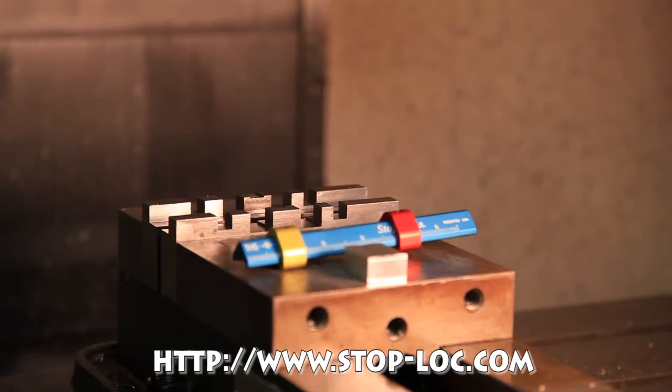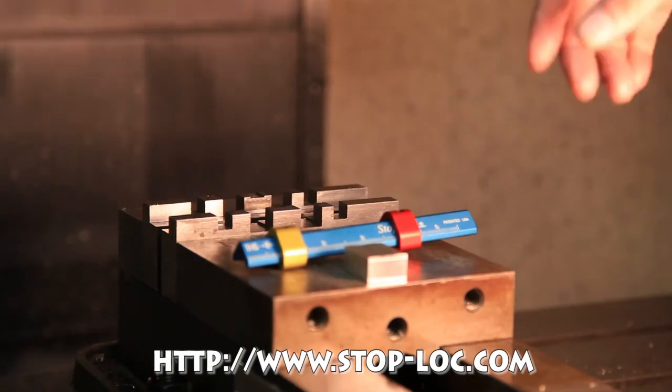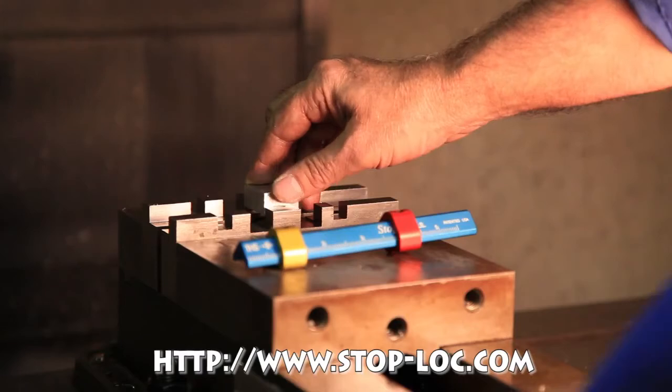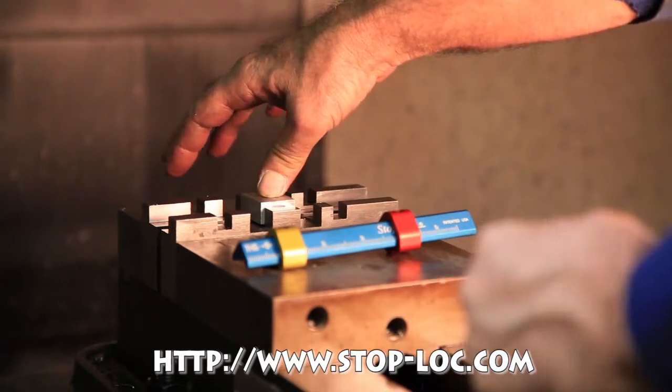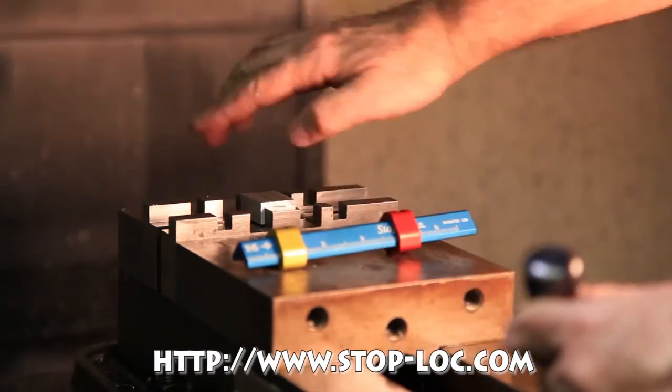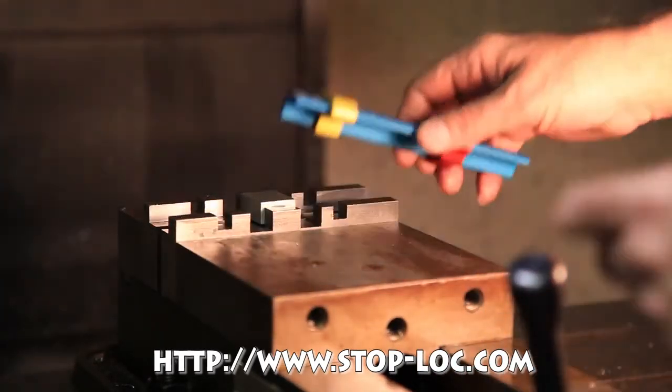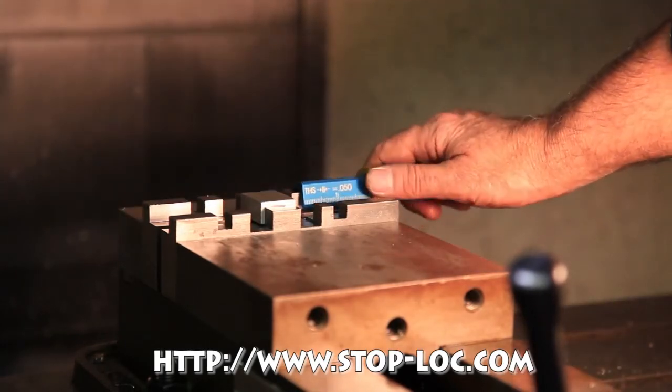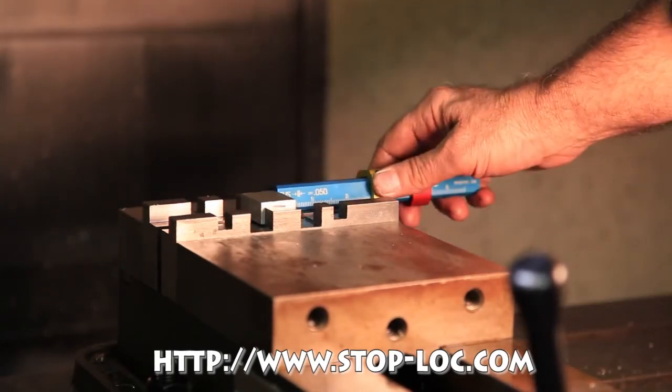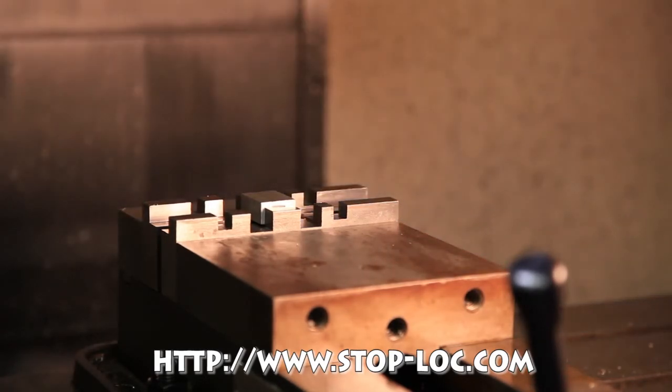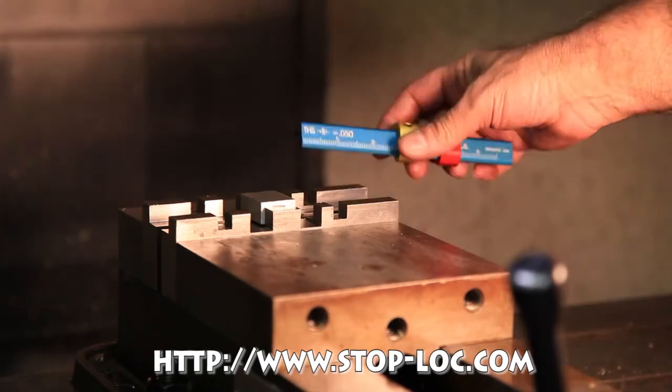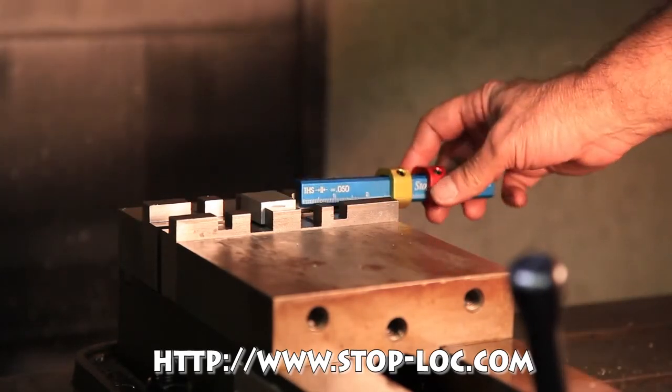I'm now going to demonstrate how handy this Stop-Loc comes in when you're going to machine three sides of a part at one time. Simply put the part in to where it looks like where you want it. So if I take the Stop-Loc, put it loose, tighten the set screw, and now it's there for good.